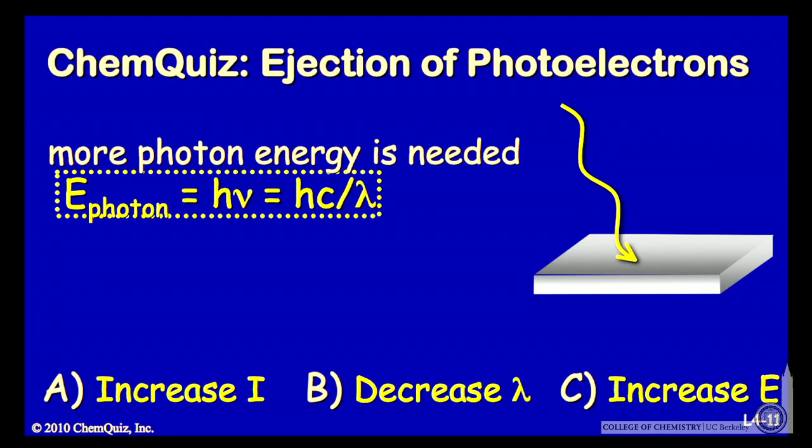You want more energy in each photon. The energy of photons is h nu or hc over lambda. So it's inversely proportional to the wavelength, directly proportional to the frequency. So if you want to increase the energy, you should decrease the wavelength.